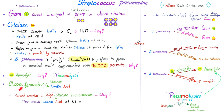Strep pneumo is a glucose fermenter — it can ferment glucose, and as you know, fermentation produces acids and carbon dioxide. That's why this bacteria cannot survive in a high-sugar medium: high glucose equals lots of lactic acid production due to robust glucose fermentation, and too much lactic acid is acidic — it kills the strep pneumo. That's why many companies add sugar to their products as a preservative. Ketchup is a classic example. High salt similarly can kill many bacteria, and strep pneumo is one of them.